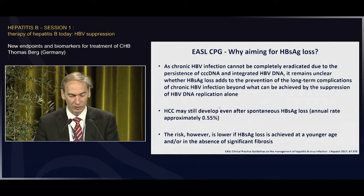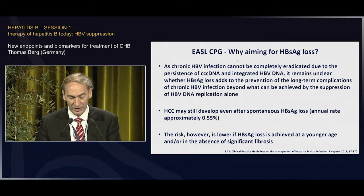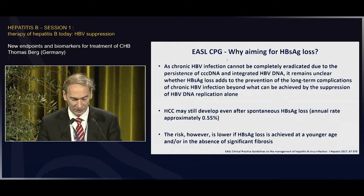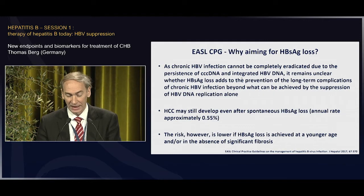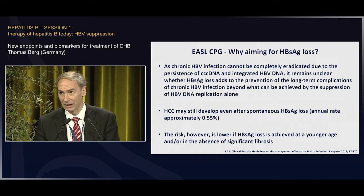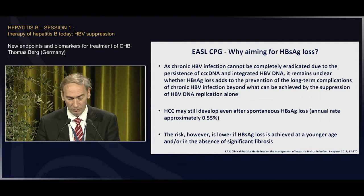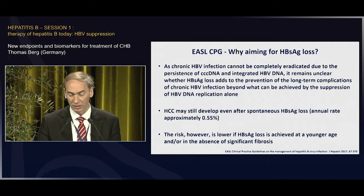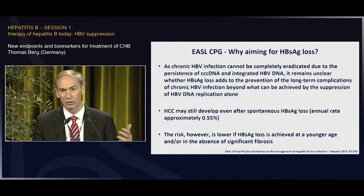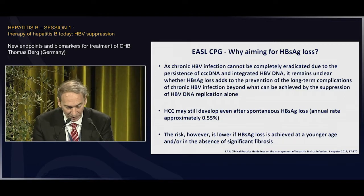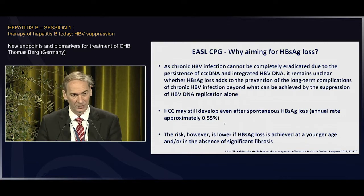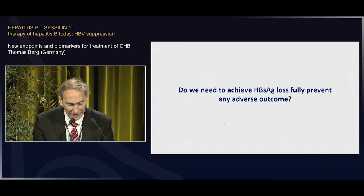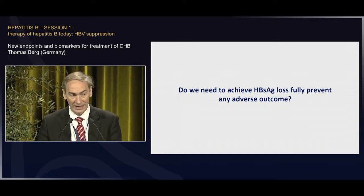The question is: why are we aiming for HBsAg loss if HBsAg per se is not an indicator to start antiviral treatment? The guideline already noted that when asking why we aim for HBsAg loss and what is the best surrogate for achieving long-term benefit, as chronic HBV infection cannot be completely eradicated due to persistence of cccDNA and integrated HBV DNA, it remains unclear whether HBsAg loss adds to the prevention of long-term complications beyond what can be achieved by suppression of HBV DNA replication alone. We know that HCC may develop after spontaneous HBsAg loss, although at a lower rate, and if HBsAg loss is achieved quite early during the course of infection, the risk is probably very low. So the question is: do we need to achieve HBsAg loss to fully prevent any adverse outcome?